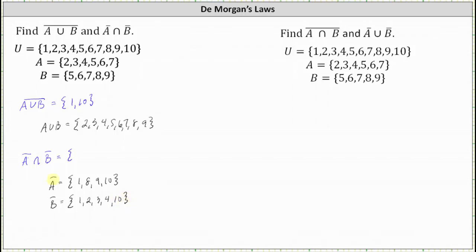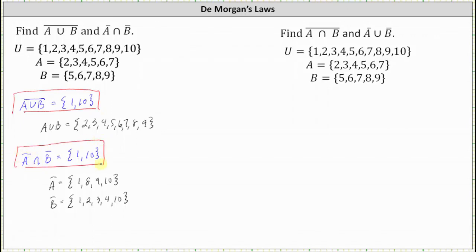Now that we have A complement and B complement, we can determine the intersection of these two sets by finding which elements are in both A complement and B complement. Notice those are the elements 1 and 10, which indicates A complement intersect B complement is the set containing {1, 10}. Notice how we get the same result for the complement of the union of A and B and A complement intersect B complement. We'll talk more about this in just a moment.